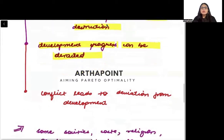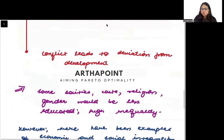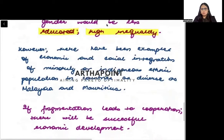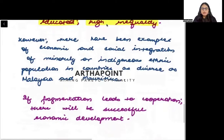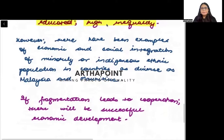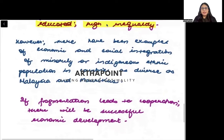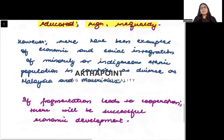Some societies based on caste, religion, or gender will be less educated and face high inequality. This is the reason cited for creating reserved seats in India for minority groups — to remove inequality and ensure everyone gets equal access to education.